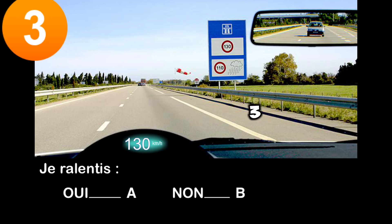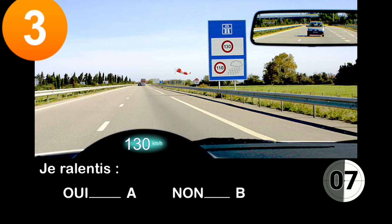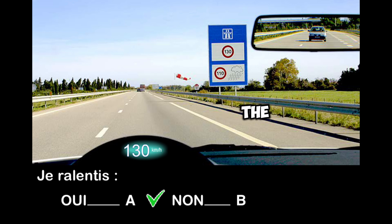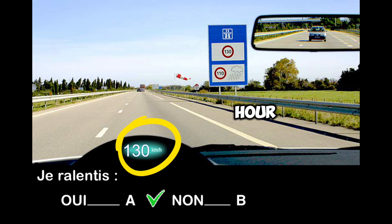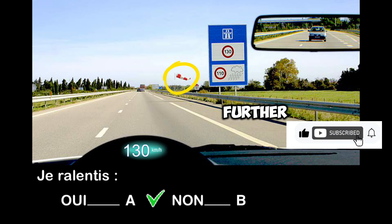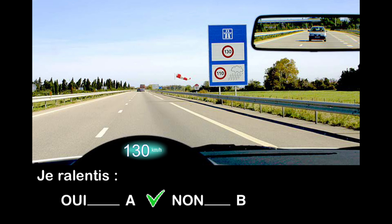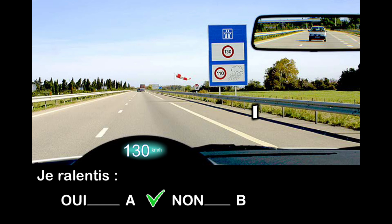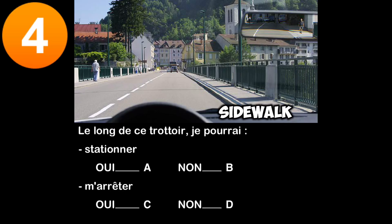Question three: I slow down — yes or no? The first sign confirms that I am traveling on a highway, reminding me of the speed limits applicable on this network — here limited to 130 kilometers per hour. But I slow down because the air sleeve visible ahead indicates by its horizontal position that a violent wind coming from the left is blowing, which may cause trajectory deviations to the right. The faster I drive, the more sensitive my vehicle is to wind effects.